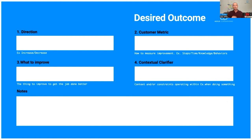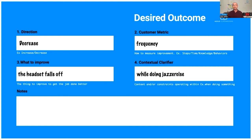Here are mine: decrease the frequency the headset falls off my head while doing jazzercise — because that seemed to go with the video. Increase the freedom of using both hands. Those are all outcomes, and there are probably a bunch of them. At the time, based on the technology available, this apparently seemed like a breakthrough solution.